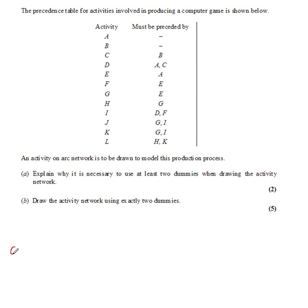Right, so we're starting from here. We'll label that zero. Then there are two things that can happen straight away: A and B. Those can come straight out of there. I'm just going to tick these off when I've done them.